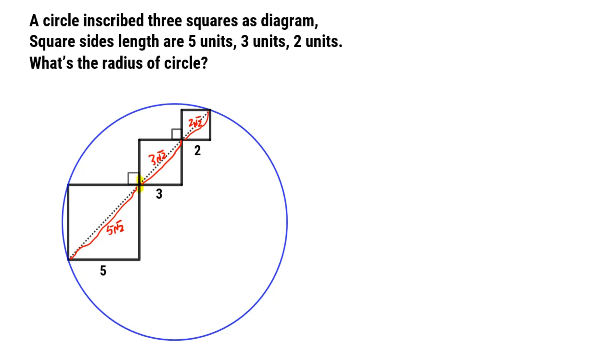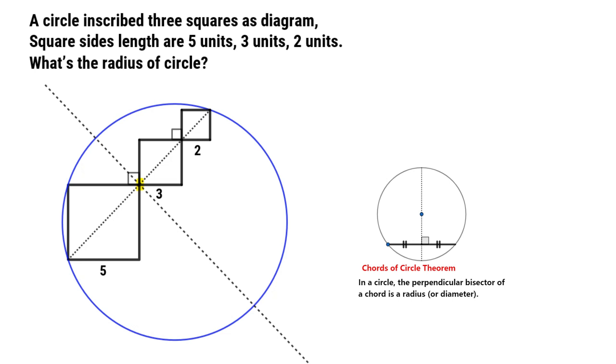So we can get this point as midpoint of the connected segment. According to the theorem of chords in a circle, the perpendicular bisector of a chord is a diameter of circle. Let's make the perpendicular bisector of the chord. So we get the first diameter of circle.